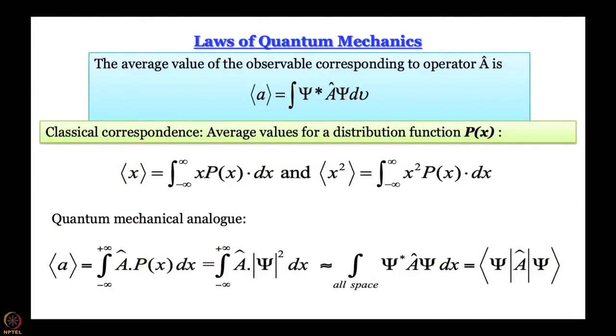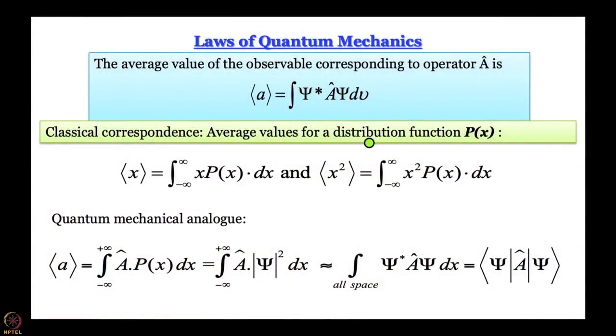This description is not complete — the earlier expression for expectation value holds only if one works with normalized wave functions, otherwise it does not. The full expression has something in the denominator provided the wave function does not satisfy the normalization condition. So once we accept Born's interpretation, we also have to accept that wave functions must be normalized.